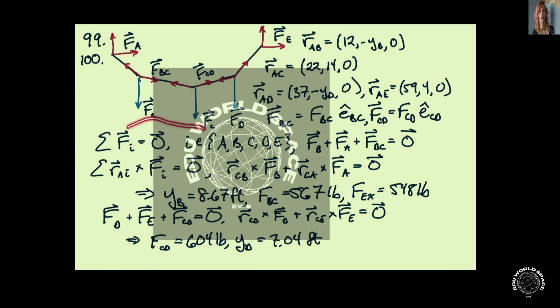If we take our free body diagram of the entire structure and sum forces over A, B, C, D, and E - so all of these forces, the reaction forces and the external forces - and then sum moments about point A about all those points. So that's this summation here where i is A, B, C, D, and E.